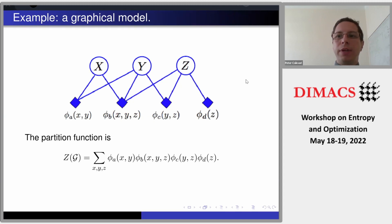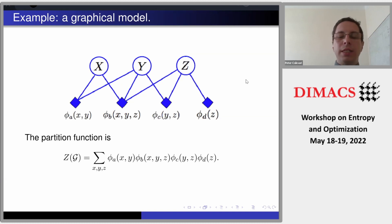Is there any question about it? Please interrupt me if you have any questions — I'm happy to answer. So that's the partition function of a factor graph. Now I will show two sub-models which I will use as running examples, and it will be pretty clear that they are special cases of this general model.